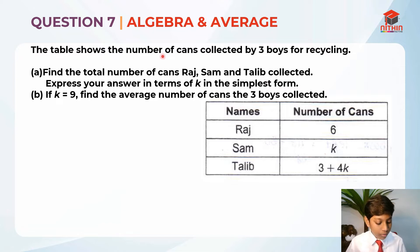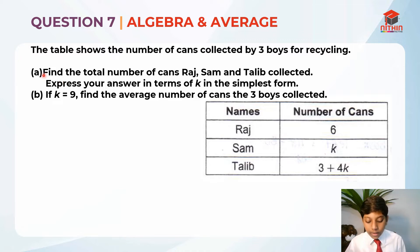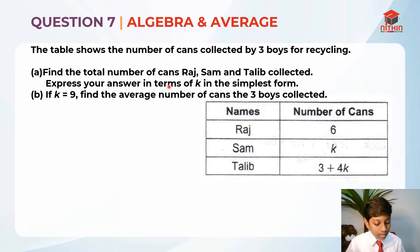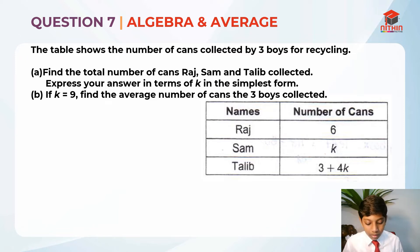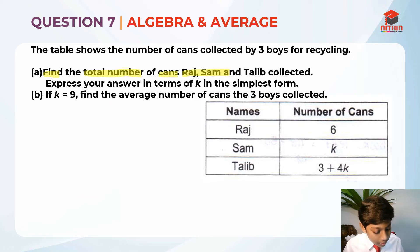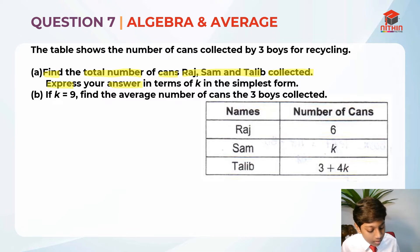The table shows the number of cans collected by 3 boys for recycling. I'll read Part A first so we can solve it. Part A: find the total number of cans Raj, Sam and Talib collected. Express your answer in terms of K in the simplest form.